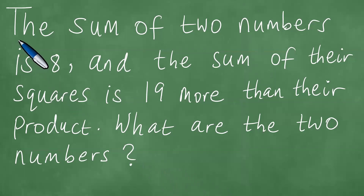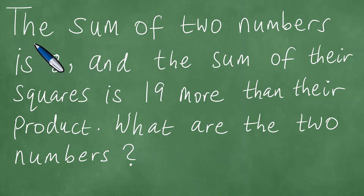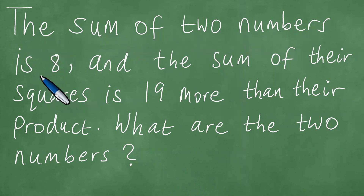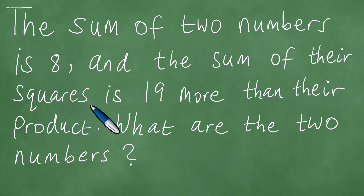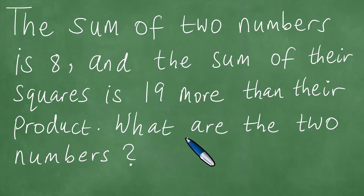We are here dealing with this particular word problem. We note that in this word problem, the sum of two numbers is 8, and the sum of their squares is 19 more than their product. What are the two numbers?